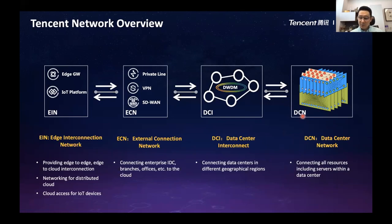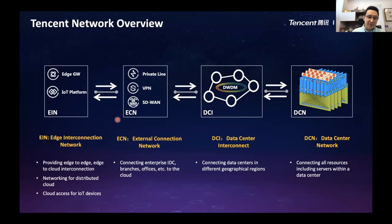DCN — we use white box switches to support our data center networks based on SDN technologies. It connects all the resources inside the data center. DCI is more like an overlay and underlay network connecting data centers in different regions — we call it the data center interconnection network. ECN is the external connection network. We use this network infrastructure to connect our enterprise IDCs or business partner branch offices to our cloud, ensuring customers can access Tencent Cloud efficiently.